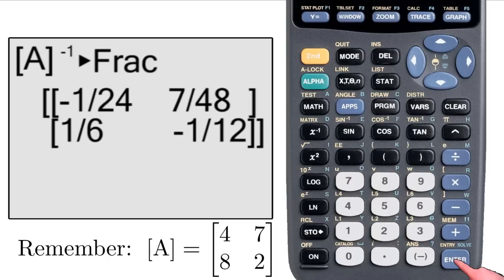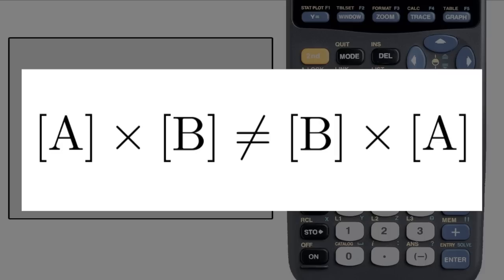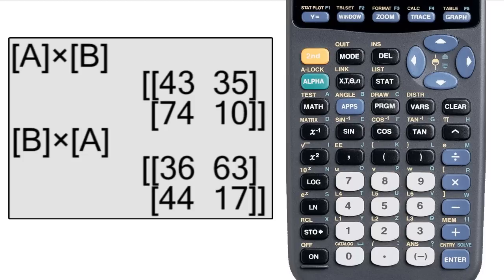Now every time anybody says anything about matrices, there seems to be some sort of moral obligation to remind everyone that matrix multiplication is not commutative. As in, A times B is not necessarily the same thing as B times A. And as you can see, you can demonstrate this on the TI-83.